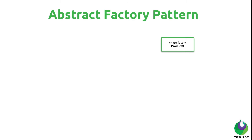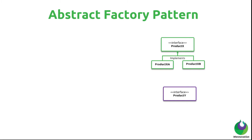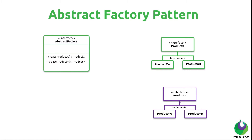Let's see how this is possible with a class diagram. Suppose we have a Product X interface with concrete implementations such as Product X-A and X-B, and another product, Product Y, with concrete implementations Y-A and Y-B. The Abstract Factory pattern suggests we have an abstract factory interface with two methods: create product X, returning the interface type Product X, and create product Y, returning the interface type Product Y.